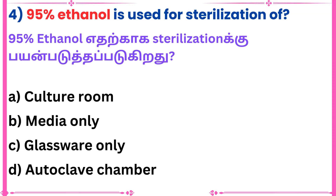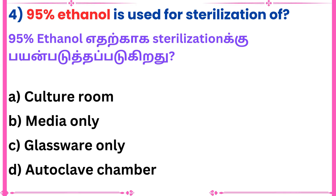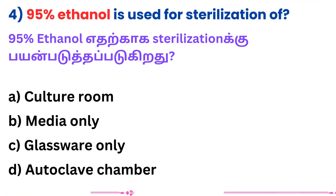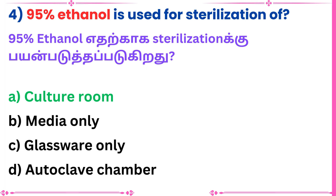Question 4: 95% ethanol is used for sterilization of which area? Answer: Culture room.